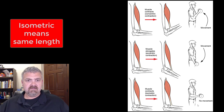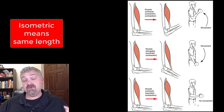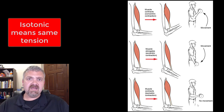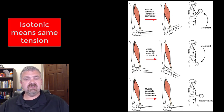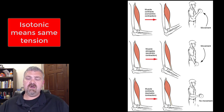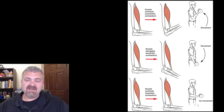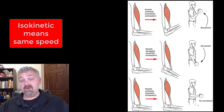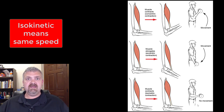Isometric is going to mean same length. So a muscle is going to contract, but it's not going to change in length, meaning it's not going to get longer or shorter, so there's not going to be any movement. Isotonic means same tension, same tone. These are going to be the type of muscle contractions where there is a change in length. Isokinetic means same speed.